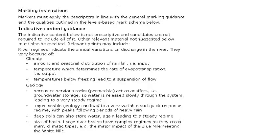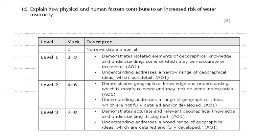Here is the mark scheme. The river regime is the variation in discharge at a point in the river at different times of the year. It might vary because different basins have different climates, or the geology might be different. If you look at the Yukon, you could say it's frozen for part of the year. You can give examples, which can be credited, although you don't necessarily need detailed case studies. Pause the video and consider how many marks you think you would have got.